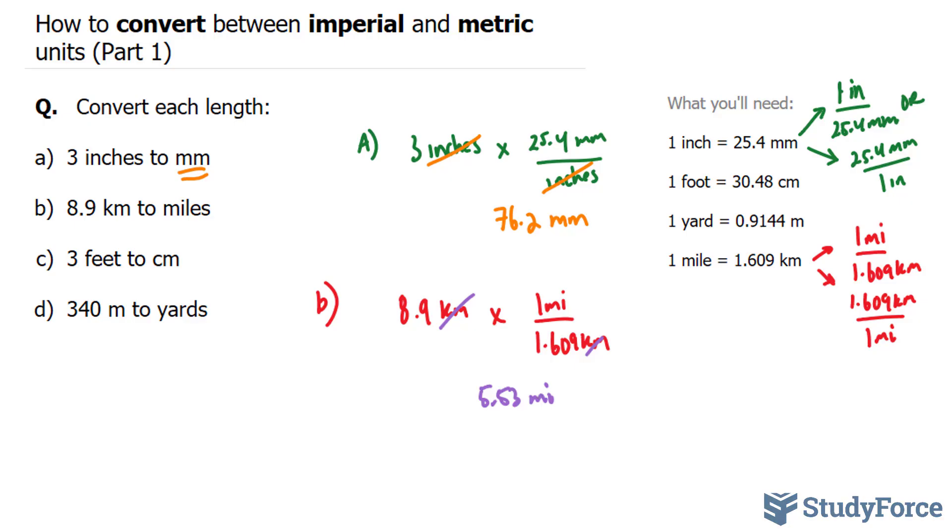Next, we'll move on to C. In part C, they want us to go from 3 feet to centimeters. So we have 3 feet, and we're going to multiply this. This is the conversion ratio that we will use. 1 foot is equal to 30.48 centimeters.